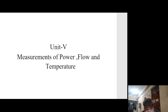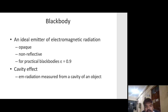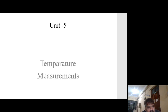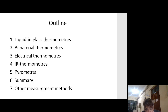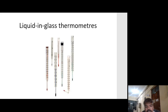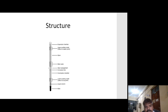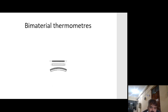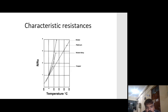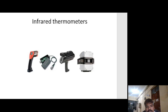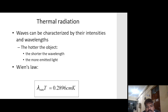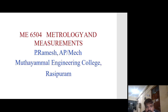Unit on measurement of power, flow, and temperature. A black body is an ideal emitter of electromagnetic radiation; cavity effect refers to radiation measured from a cavity of an object. Temperature measurement methods include: liquid-in-glass thermometer, bimetallic thermometer, electrical thermometer, pyrometer, and infrared thermometer. The infrared thermometer uses thermal radiation and Planck's law based on black body principles. That covers metrology and measurement — please subscribe to the channel if you have not done so. Thank you.